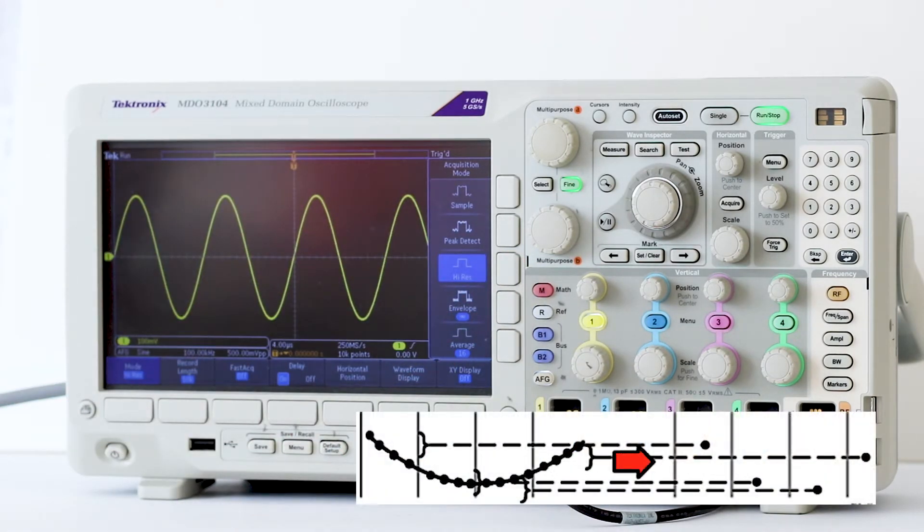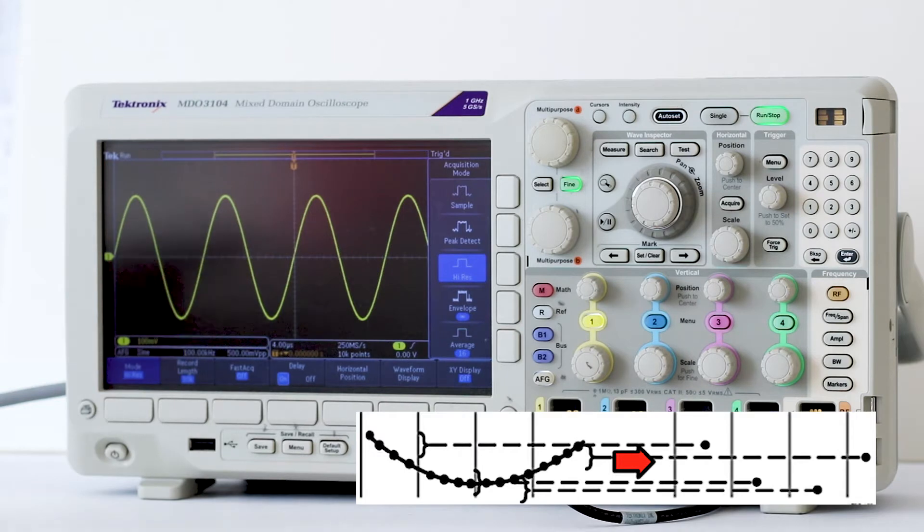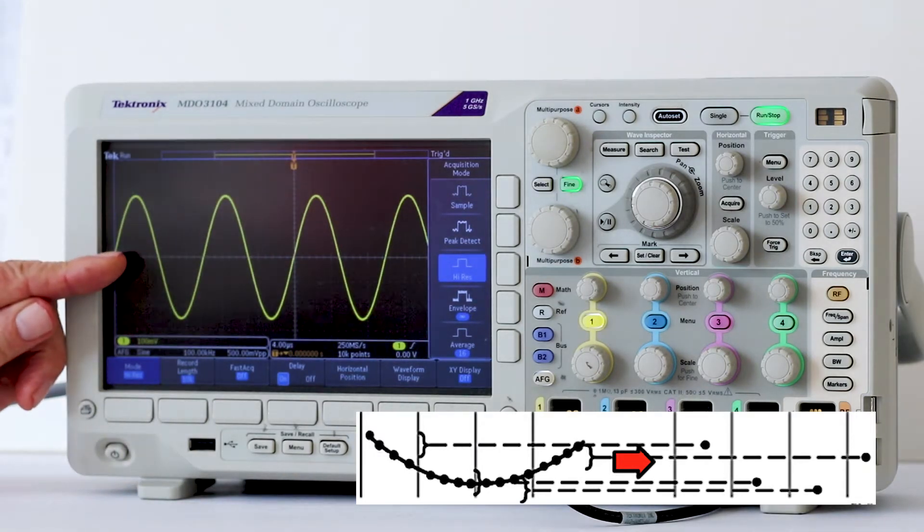High-resolution mode calculates the average of all the samples for each acquisition interval. This mode also works only with real-time, non-interpolated sampling. High-resolution mode provides a higher resolution waveform at the expense of lower bandwidth. Notice the fine line that is the trace.